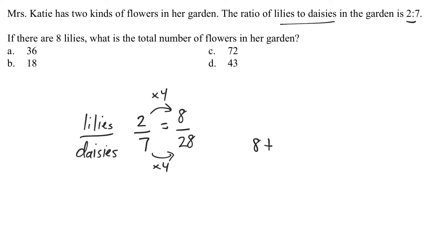So I would take eight plus 28 and that should be 36 total flowers in the garden. And it looks like that is option A right there.